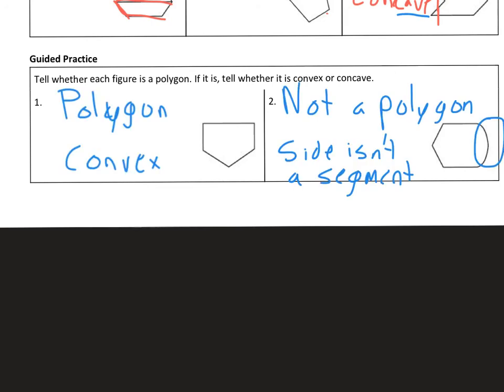To wrap up this video, just showing the first example here - it looks like a home plate. That is a polygon. All the sides are segments, each side intersects two other sides exactly, and then for that one it's convex. That's a convex polygon.